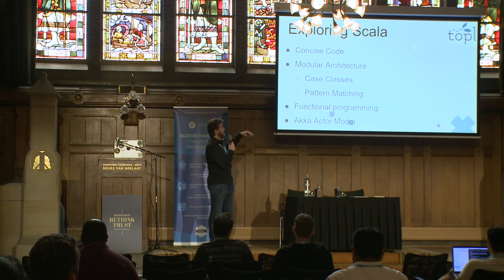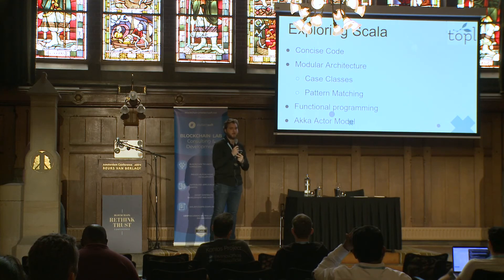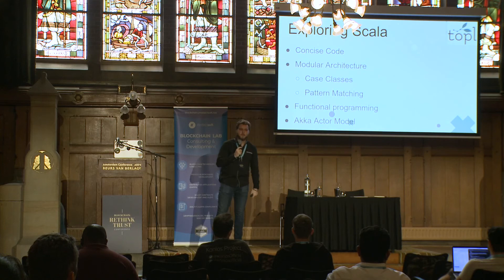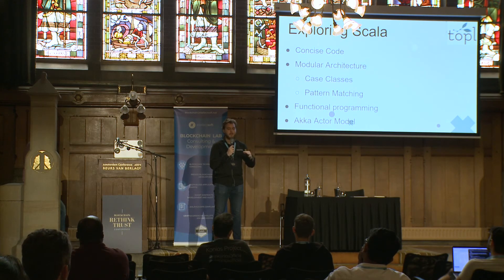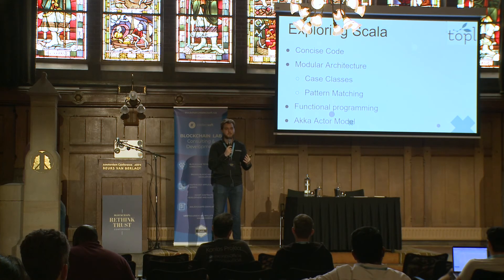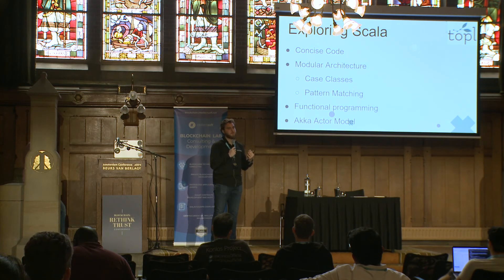Scala also has a lot of architectural things built in that increase modularity. Two key things I particularly like are case classes and pattern matching. Case classes build on top of regular classes where you can implement pattern matching on top of them. You can do partial or full matching and reason about hierarchies, types, and other things within a system — much better than if you didn't have those. Without them, you would have to spend a lot more boilerplate and a lot more code just to get the same kind of functionality.